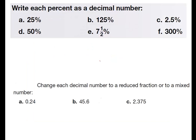Write each percent as a decimal number. A is going to be 25%, which is 0.25. B, 125%, is going to be 1.25 because 1 is the 100 and 0.25 is the 25%. C, 2.5%. If you write 25% as 0.25, 20% would be 0.2, 10% would be 0.1, so 2% would be 0.02, and then we just add our 5. So 0.025 would be 2.5%. 50% is going to be 0.50 or 0.5. 7.5% is going to be 0.075. And then F, 300%, would be 3.0.